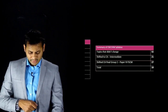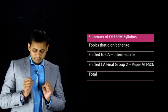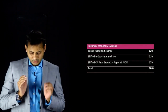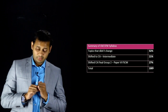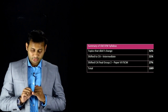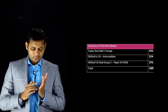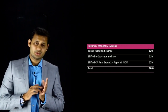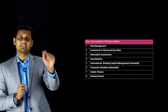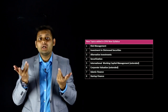To summarize: of the old SFM syllabus, 52% has not changed, 21% has been shifted to CA Intermediate, and 27% has been shifted to CA Final Group 2. Together that accounts for 100% of the old course content.